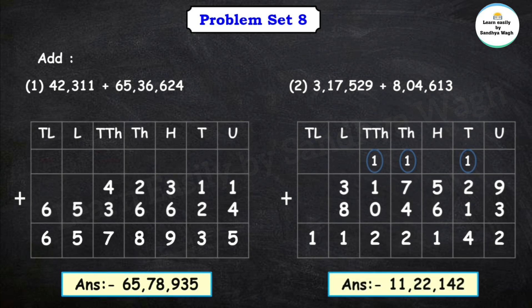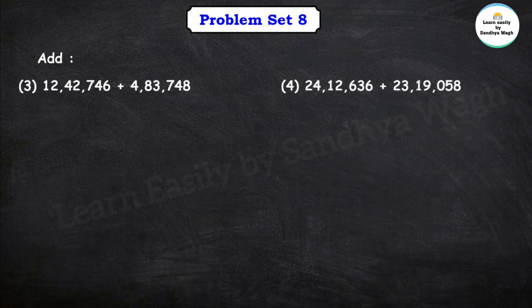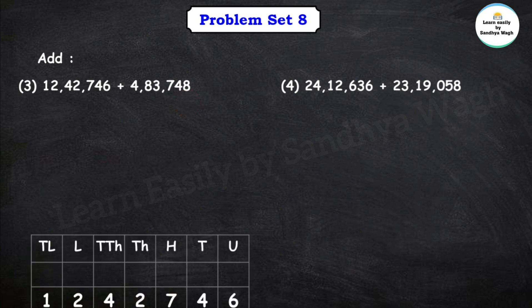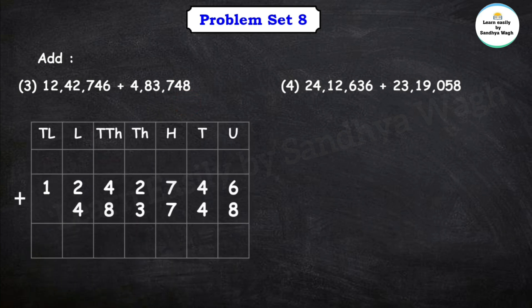Next question: 12 lakh 42,746 plus 4 lakh 83,748. Let's add these two numbers. 6 plus 8 is 14, so we write 4 and carry 1. 4 plus 4 is 8, plus the carried 1 is 9. Then 7 plus 7 is 14, so we write 4 and carry 1 to the thousands place.